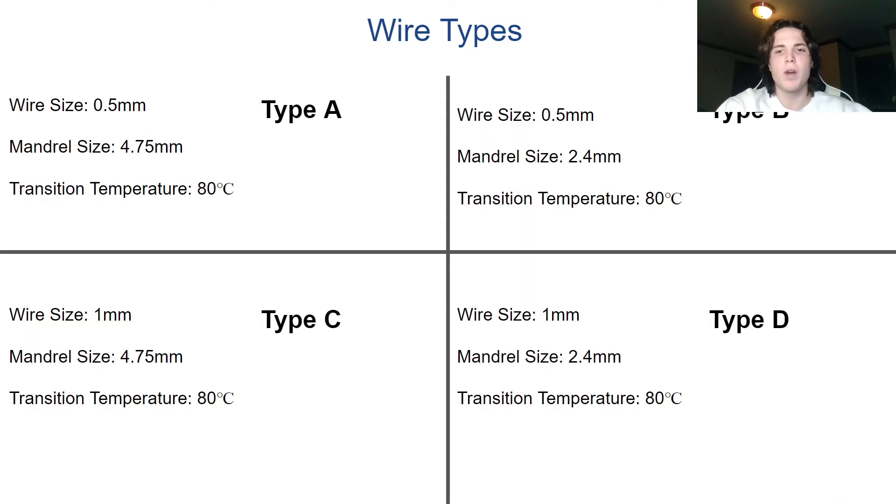Four different wire types are tested in this research. Types A and B have wire sizes of 0.5 mm. Types C and D have wire sizes of 1 mm. Types A and C have mandrel sizes of 4.75 mm. Types B and D have mandrel sizes of 2.4 mm. The mandrel size of a spring is the inner diameter of that spring, and all four types have a transition temperature of 80 degrees Celsius.